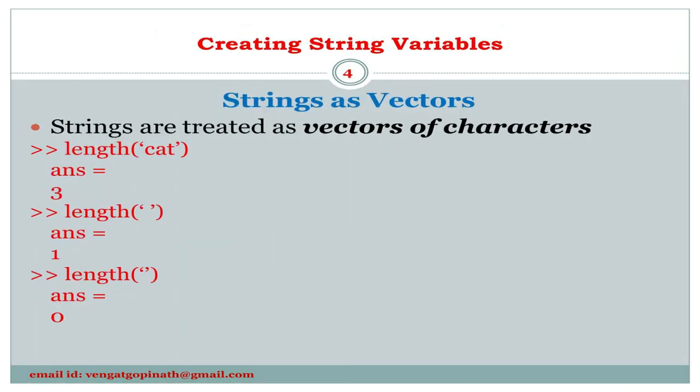Next, we will discuss strings as vectors. Strings are treated as vectors of characters — a vector in which every element is a single character, so many vector operations can be performed. For example, the number of characters in a string can be found using the length function. The empty string has a length of 0, while a string consisting of a blank space has a length of 1.